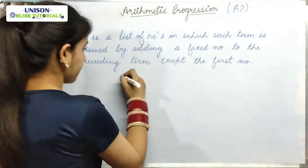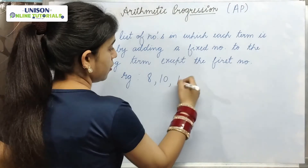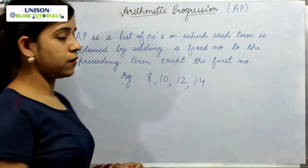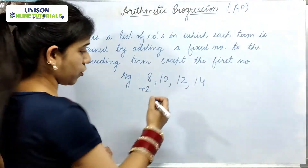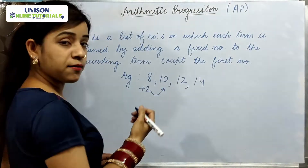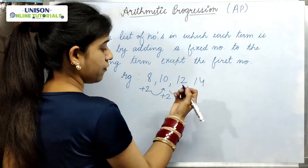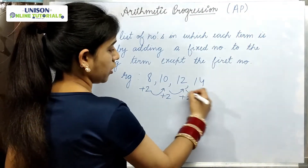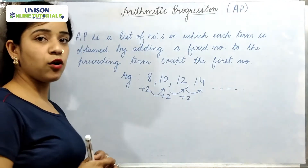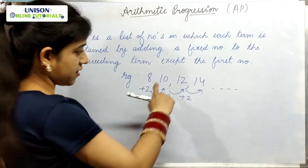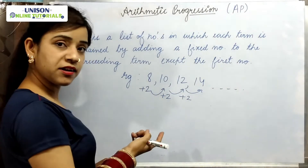Let's take an example: 8, 10, 12, 14. Here you can see that when we add 2 to 8, we get 10. Similarly, when we add 2 to 10, we get 12, after that 14. So, we have a sequence of numbers that follow a certain pattern. As we can see, the successive term is obtained by adding a fixed number to the preceding term.